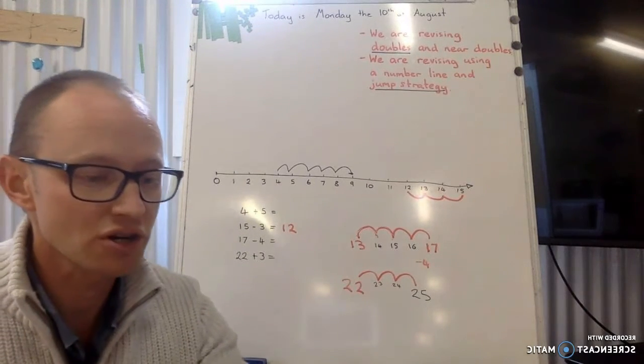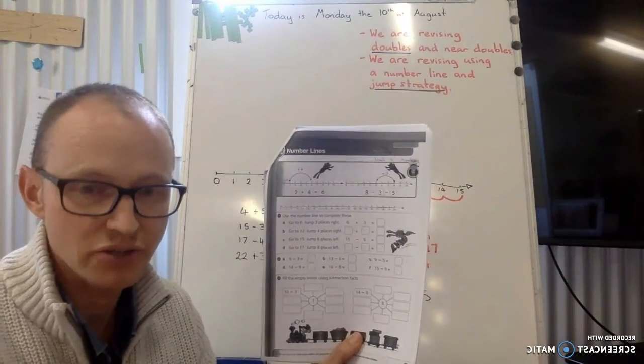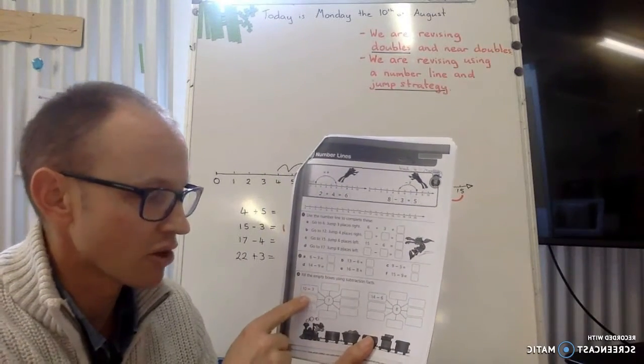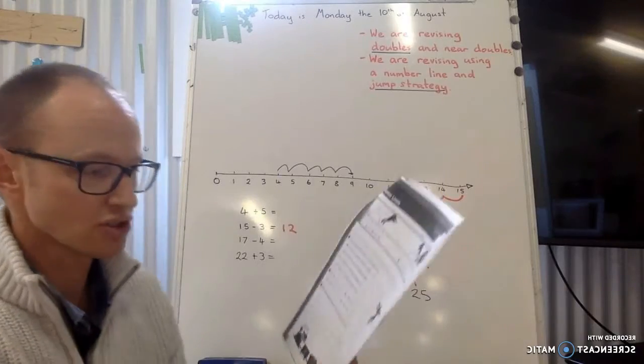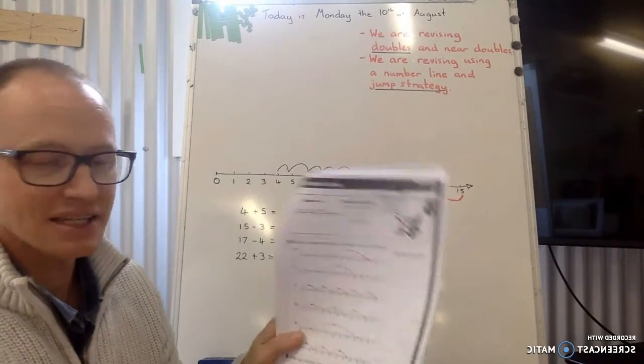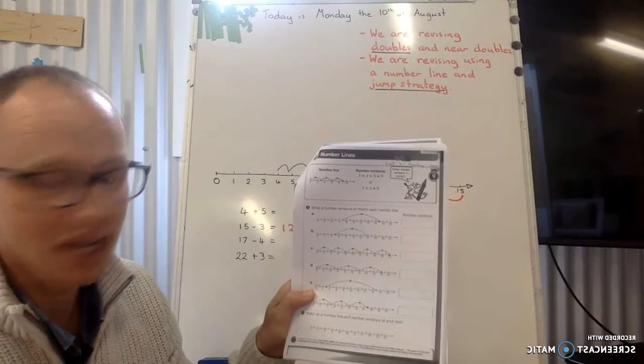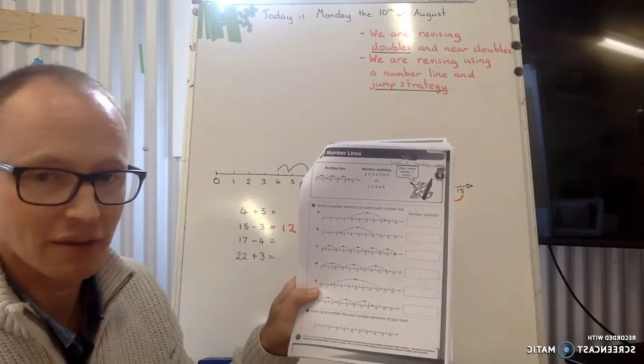Now what I've got is this sheet here, very similar to what I've just done there. So it's going to be looking at using the number line to actually solve these questions. The next part that you're going to be working on is, it's already got the picture of a number line and you have got to write the number sentence to match.